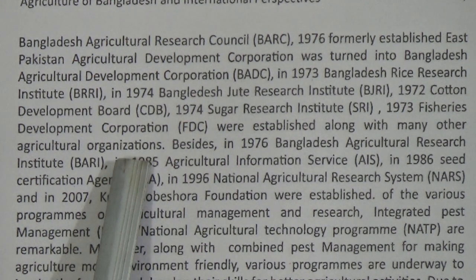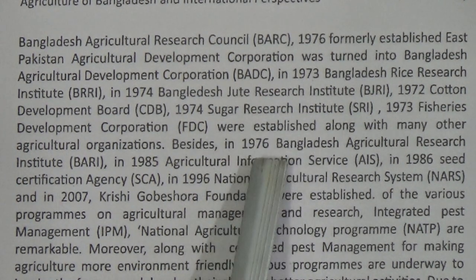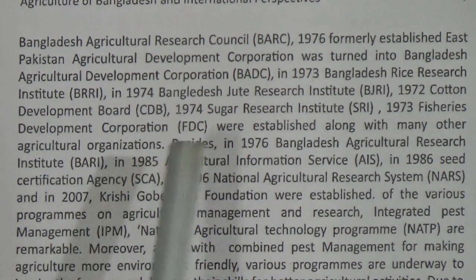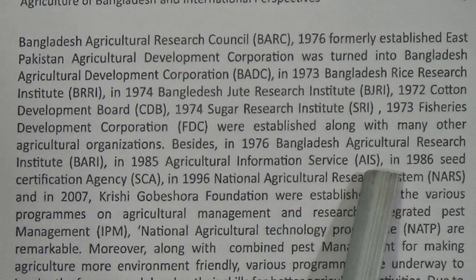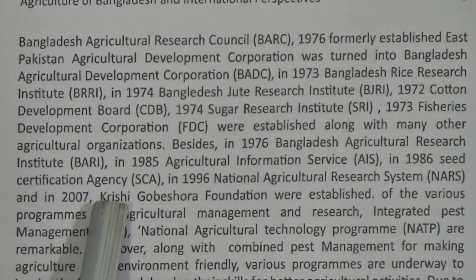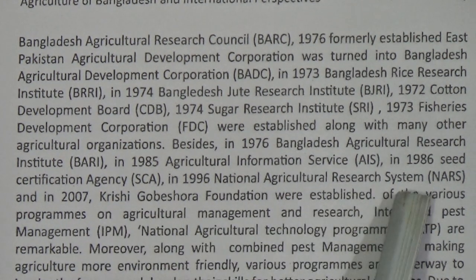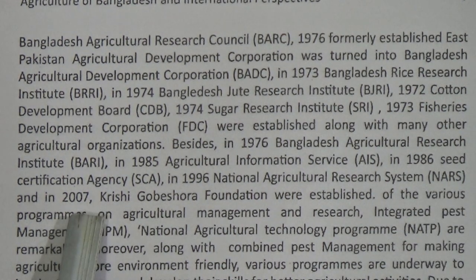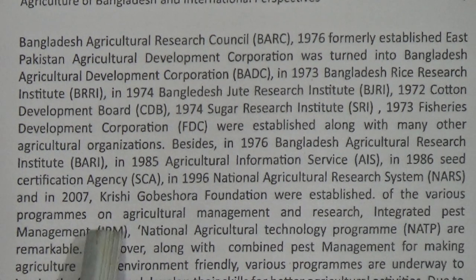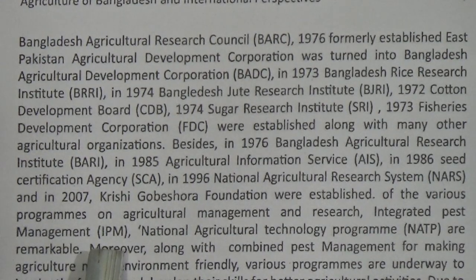After independence, more organizations were established: in 1976, Bangladesh Agricultural Research Institute (BARI); in 1985, Agricultural Information Service (AIS); in 1986, Seed Certification Agency (SCA); in 1996, National Agricultural Research System (NARS); and in 2007, Krishi Gobeshona Foundation.